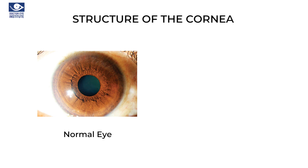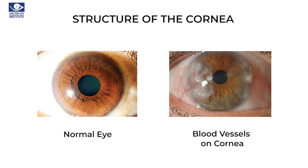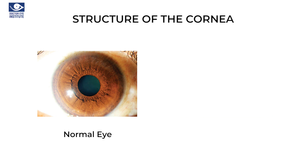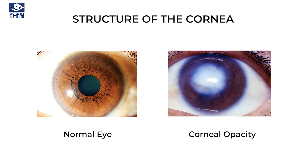It is an avascular structure, that is, containing no blood vessels. Hence the presence of any blood vessel on its surface indicates an abnormality. It is a transparent structure, so any opacity on the surface visible to the naked eye requires an eye check-up.